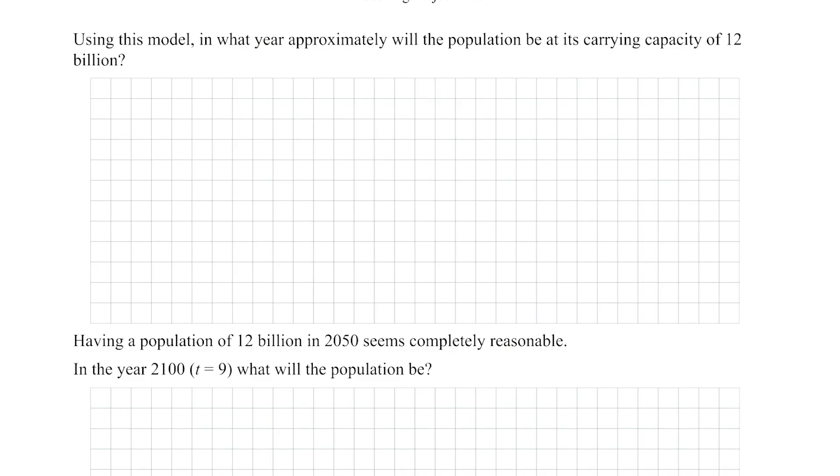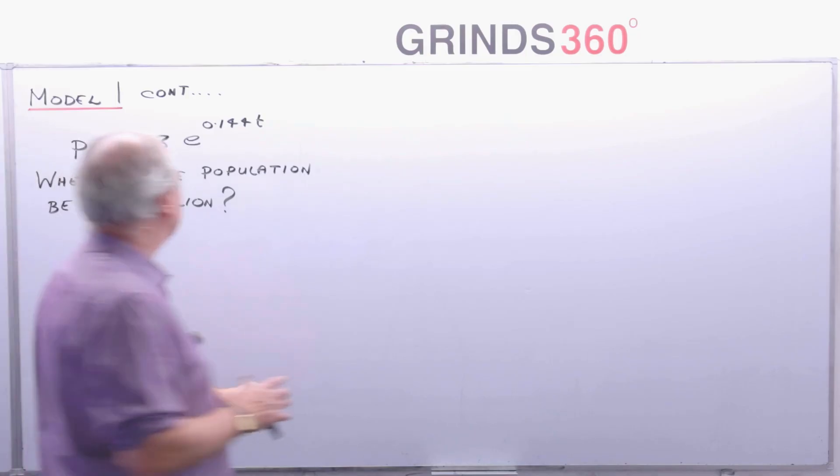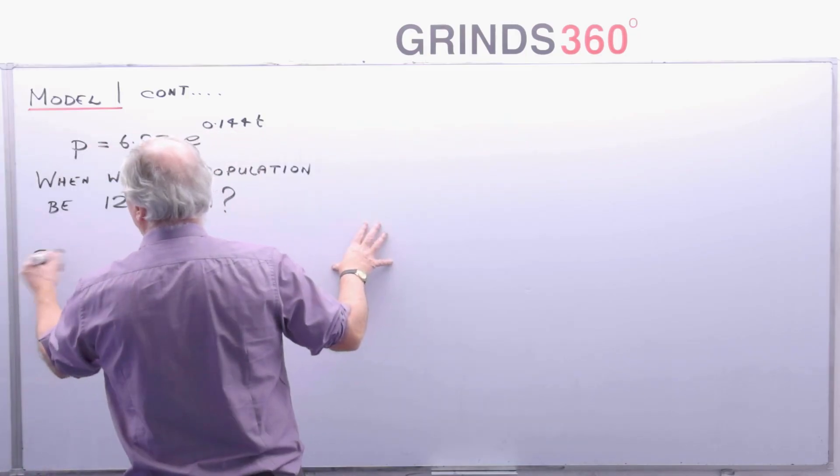I want to see, is my solution any good? So it says here, using this model, in what year, approximately, will the population be at its carrying capacity of 12 billion? So I want to see, when does that occur according to model number one? So we're talking about p is equal to 12.